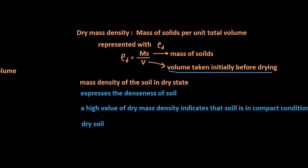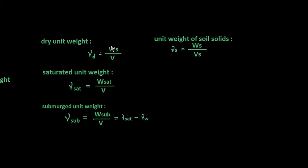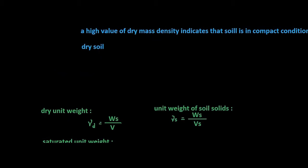Dry unit weight is represented with γd, and γd equals weight of solids divided by total volume. Saturated unit weight is represented with γ_saturated, and γ_saturated equals weight of saturated soil divided by total volume. In all cases the volume is taken initially before drying. Submerged unit weight γ_submerged equals weight of submerged soil divided by total volume, the same as in the previous case.